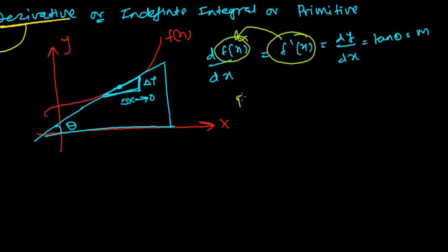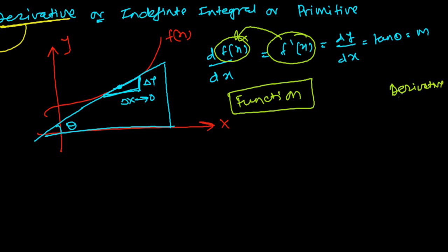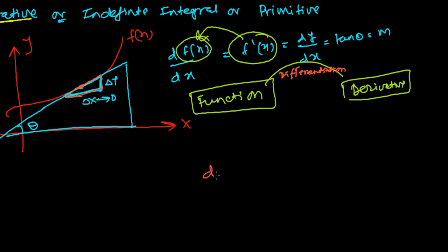So you have a function, and when you find its derivative through differentiation, you get f'(x). For a real example: the derivative of 3x is 3. So, derivative of f(x) is f'(x), and 3 is the derivative of 3x.